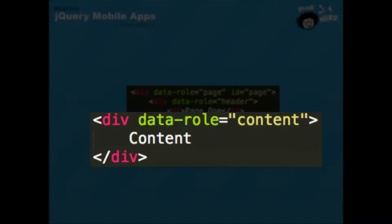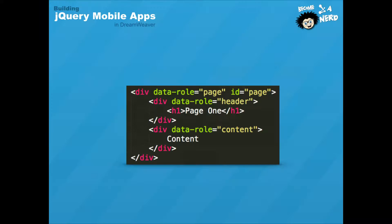The second element is data-role equals content. This is what's on the main page, and you need to have a content div on every single page for something to show on screen when they navigate there. You name it data-role equals content, and within that div tag you can put whatever HTML you want — image tags, p tags, other header tags. You can also assign buttons and other items right within that content, and they will be visible to the user as soon as they navigate to that page.